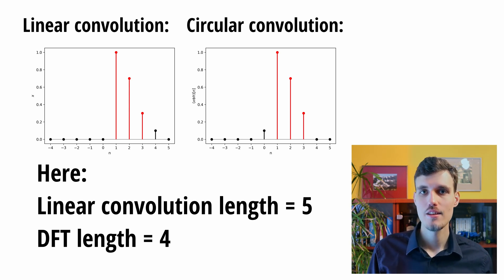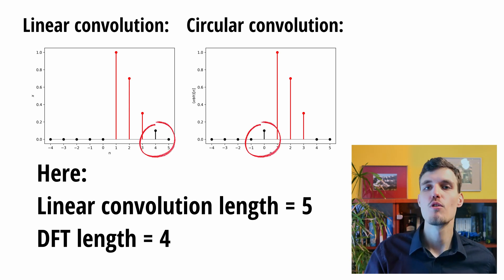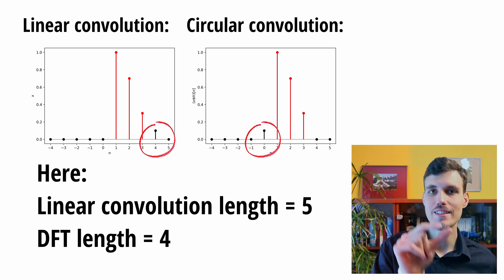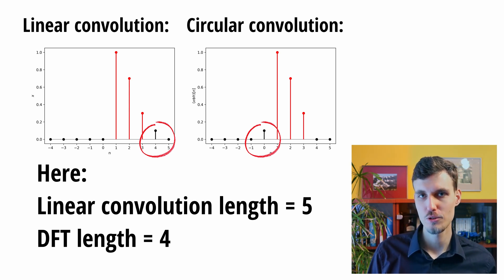If the length of the discrete Fourier transform is one less than the expected linear convolution output, this one excessive sample wraps around the buffer and is added to the beginning of the linear convolution, and thus it needs to be discarded. And the more and more samples of the linear convolution exceed the length of the discrete Fourier transform, the more samples we need to discard from the output.